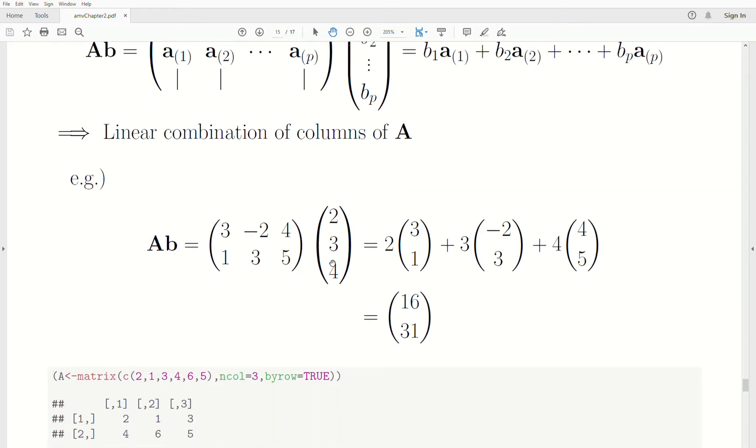Now, as an example of this, we can take this matrix times this vector. If we kind of ignore this for a second, we take this first row times this column, and it's 16. This row times this column, and it's 31.